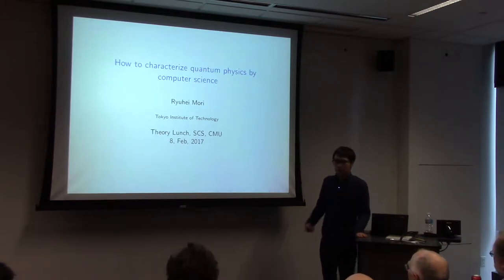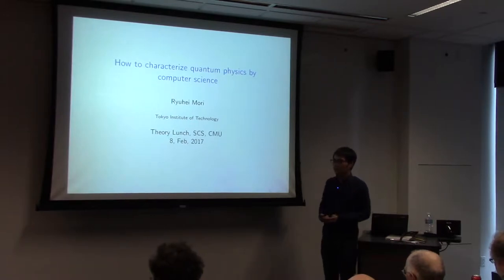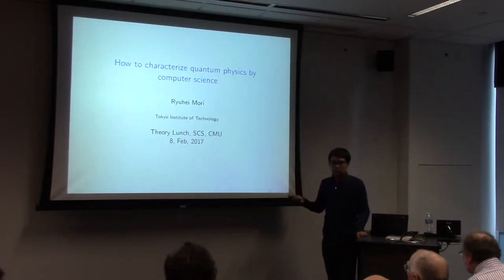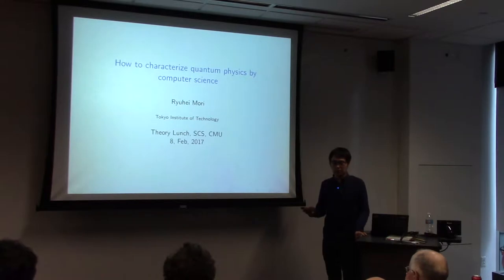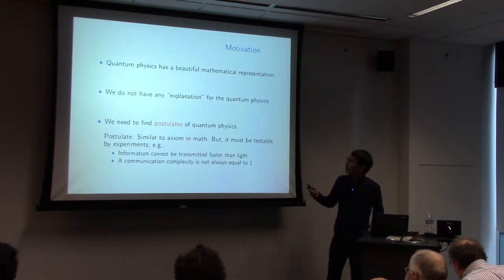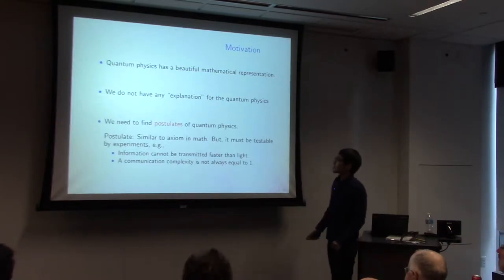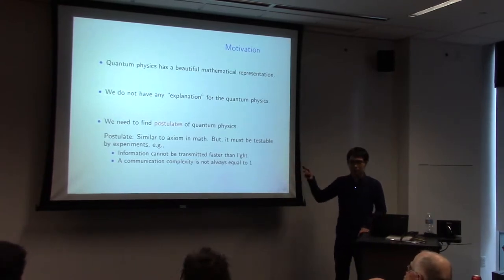Usually, first we know the mathematics of quantum physics, then we can argue which quantum information processing is possible or not possible. But in this area, we consider it in the opposite way. First, we argue which information processing should be possible or should not be possible, then we characterize quantum physics. Quantum physics has a beautiful mathematical representation, so it is completely fine — no one doubts quantum physics.